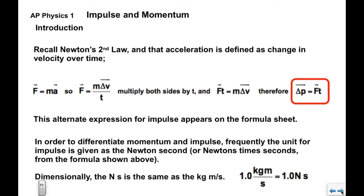Now, in order to differentiate momentum and impulse, frequently the unit for impulse is given as Newton seconds, N space S, or if you're going to put this in a website. Dimensionally, Newton second is the same as kilogram meters per second. So they are equivalent.